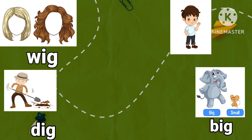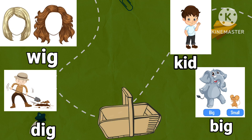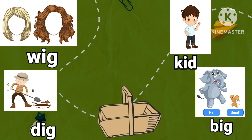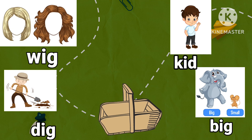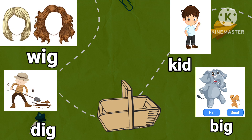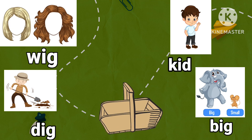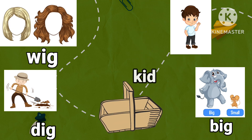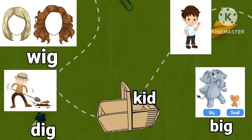Next. Wig, dig, kid, big. Wig, dig, kid, big. Pick out the word that does not rhyme in the group. Kid. Pick up the word kid and drop it in the basket.